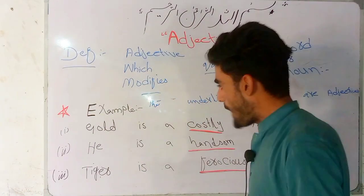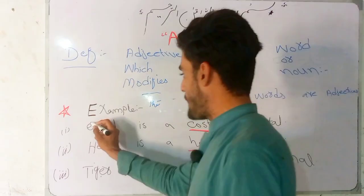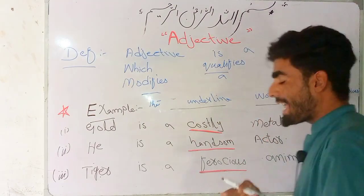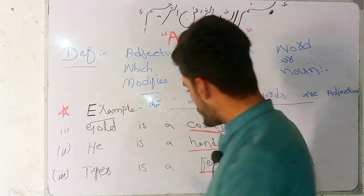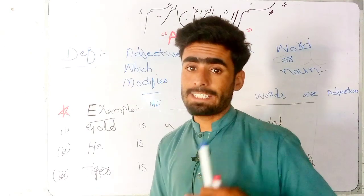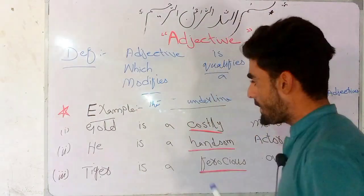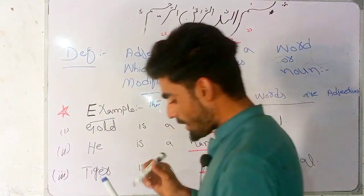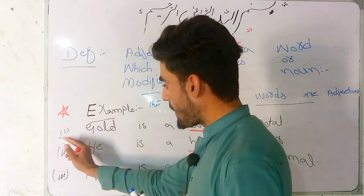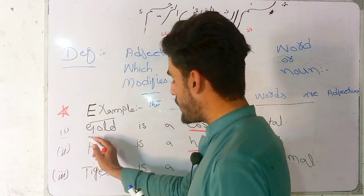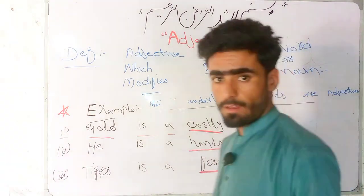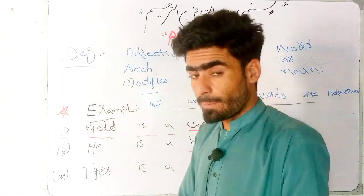So here I have an example. The underlined words are all adjectives. You can definitely see here. I have an example: 'Gold is a costly metal.' Gold is a costly metal.